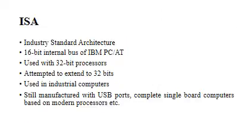Industry Standard Architecture or ISA is the 16-bit internal bus of IBM PC 80286 and similar computers based on the Intel 80286 and its immediate successors during the 1980s. The bus was backward compatible with the 8-bit bus of the 8088-based IBM PC including the IBM PC XT as well as IBM PC compatibles. The 16-bit ISA bus was also used with 32-bit processors for several years, and an attempt to extend it to 32-bits called Extended Industry Standard Architecture, that is EISA, was not very successful.